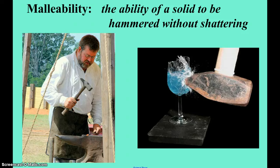Malleability is the ability of a solid to be hammered without shattering. In the old days, blacksmiths would heat up iron and then pound it — it would bend because it was very malleable at that temperature. Glass, if you hit it with a hammer, shatters. Silly putty and Play-Doh are also very malleable.